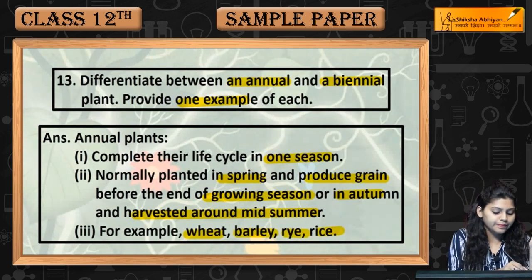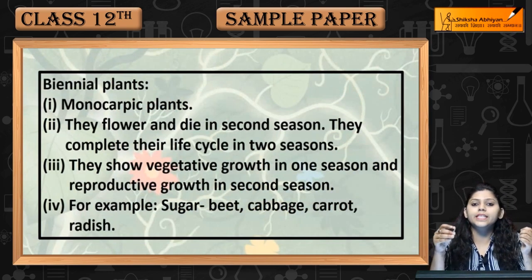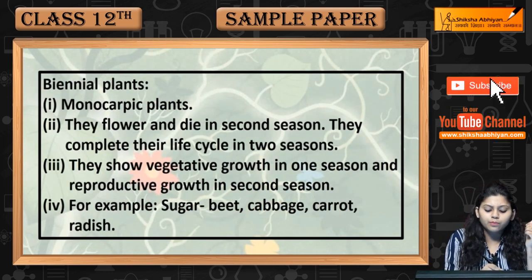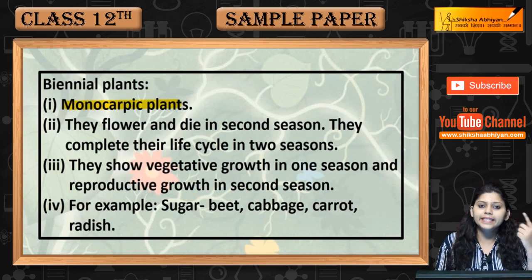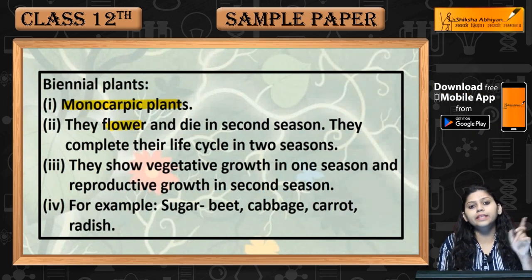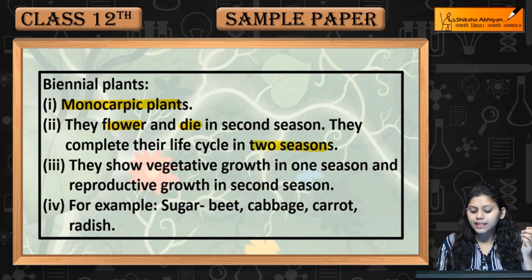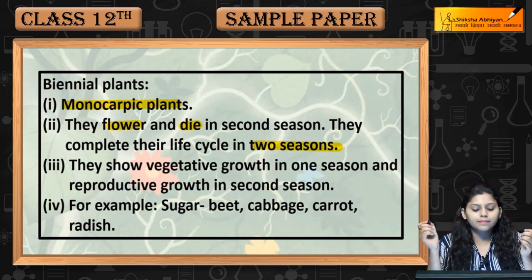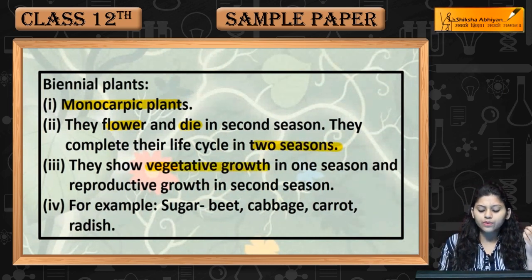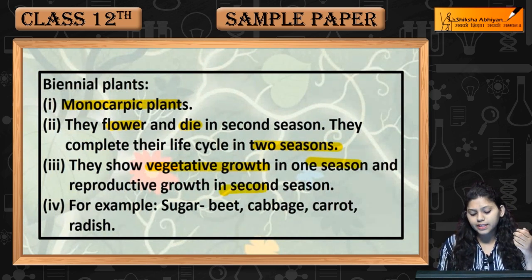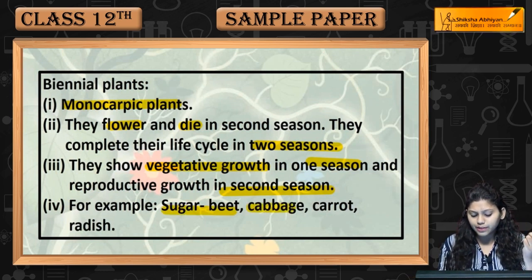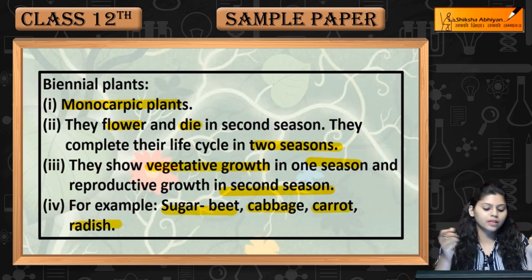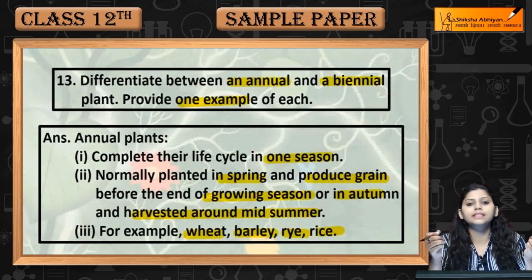Biennial plants are monocarpic — they flower in one season and die in the next. They complete their life cycle in two seasons: showing vegetative growth in the first season and reproductive growth in the second season. Examples include sugar beet, cabbage, carrot, and radish.